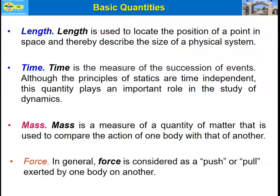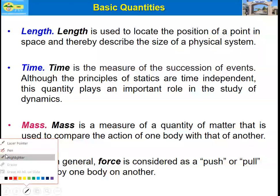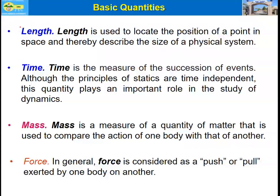Let us start from the basic quantities in mechanics. In mechanics we have four basic quantities: the first one is length, the second one is time, the third one is mass, and the fourth one is force. Length is used to locate the positions of a point in space, or it can be used to describe the size of a physical system.